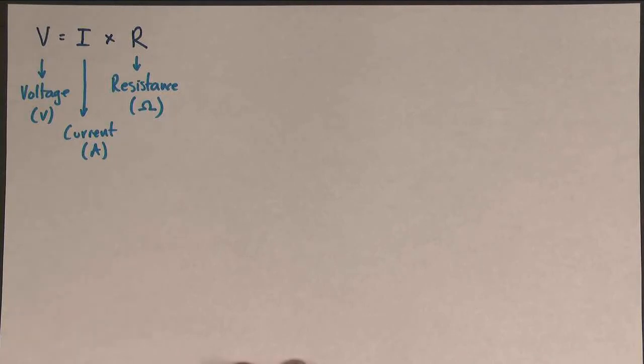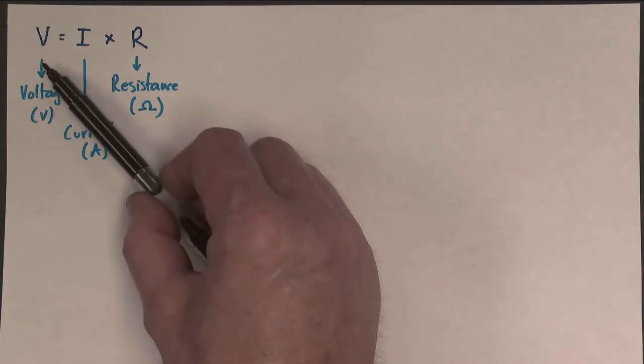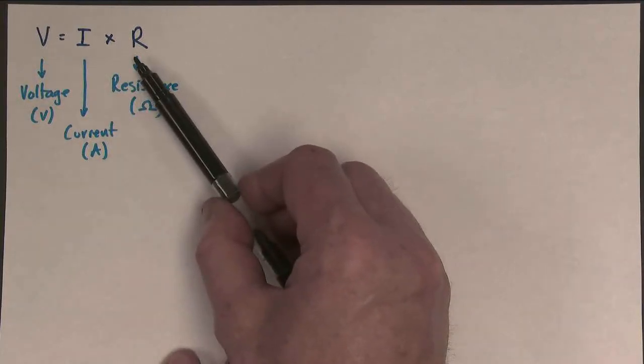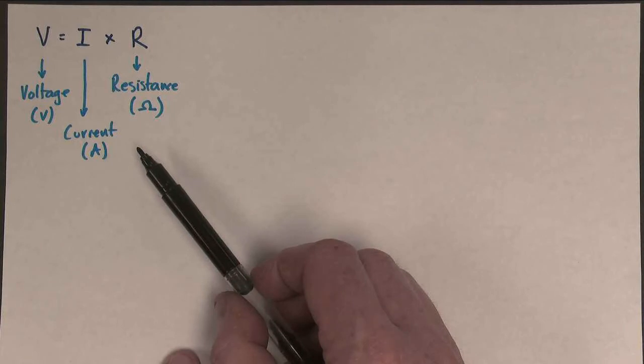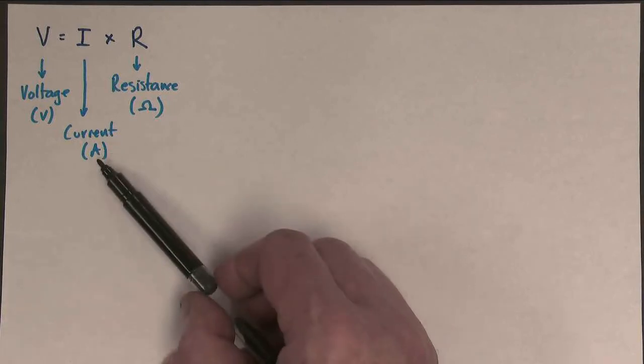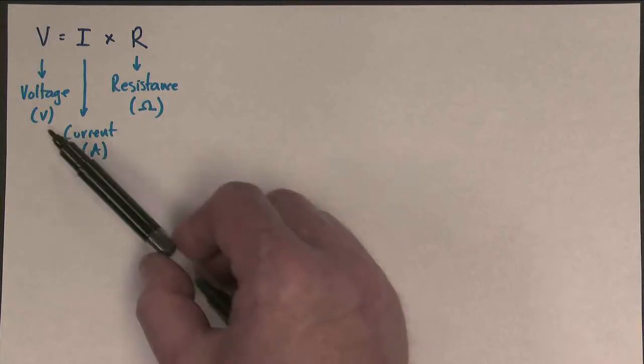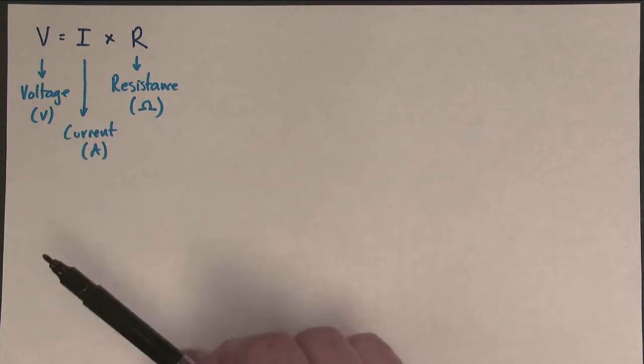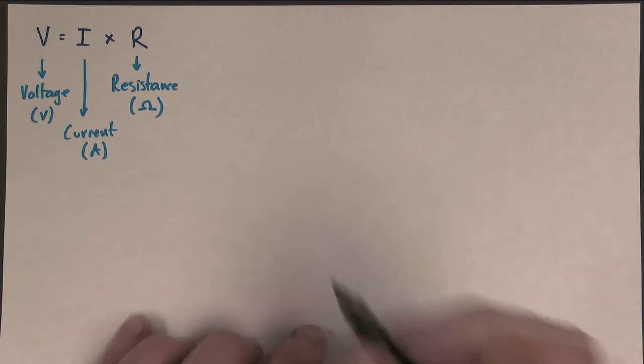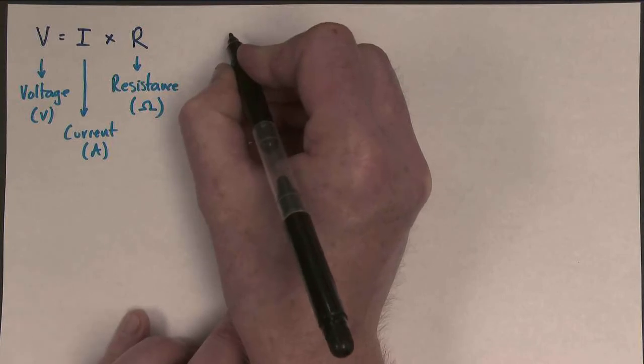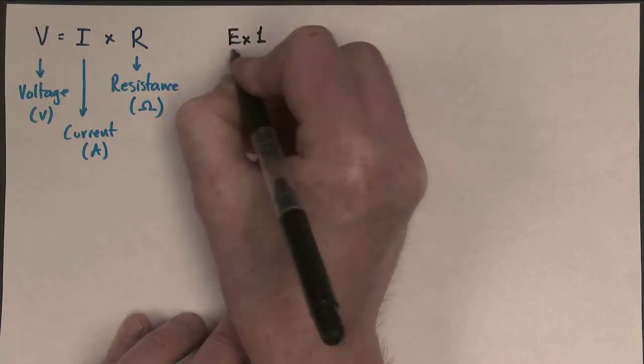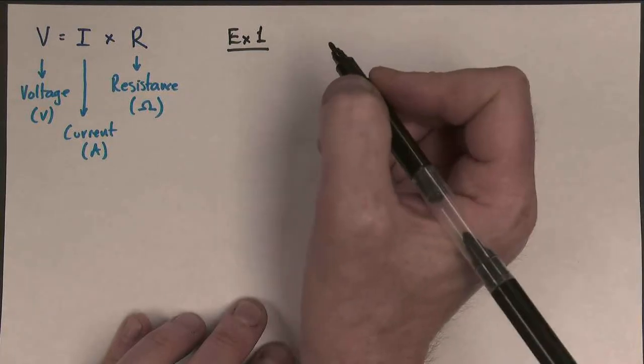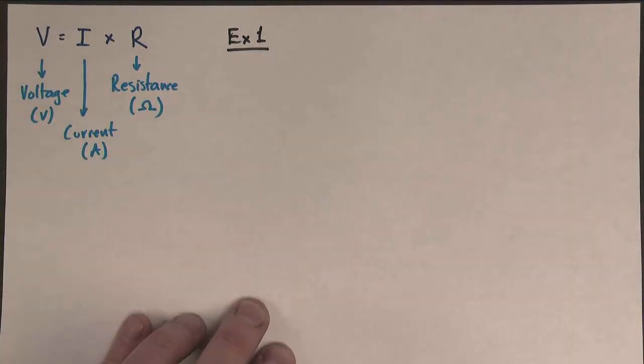In this video, I'm going to use this equation, V equals I times R, which we're familiar with, to do two examples which teach us how to deal with non-standard units. So when the current isn't in amps, the resistance isn't in ohms, and maybe the voltage isn't in volts. These are going to be using prefixes. So this is quite straightforward examples because the issue here is how to use a calculator and how to actually deal with the prefixes, not how to use the equation.